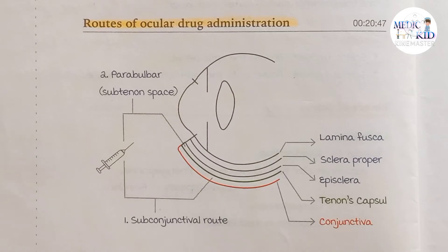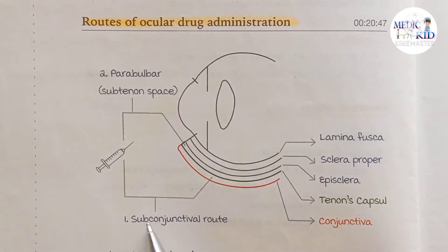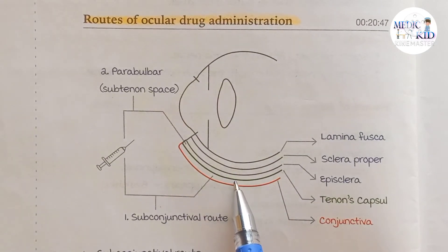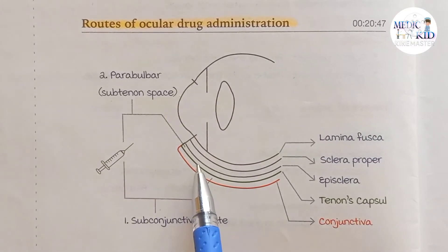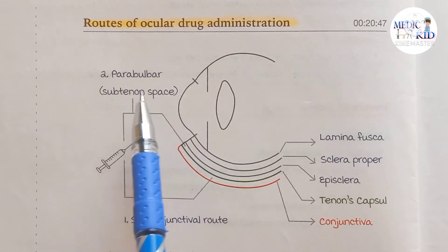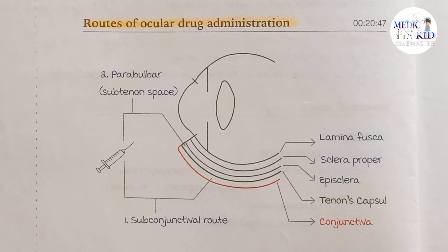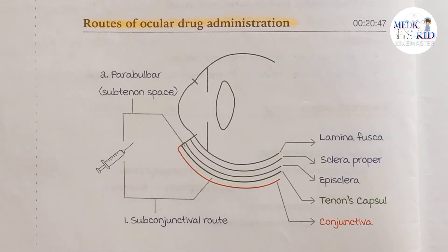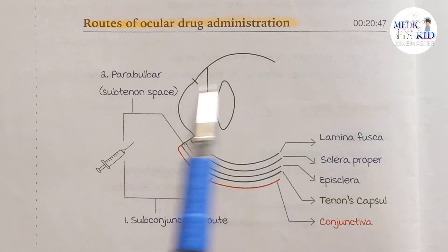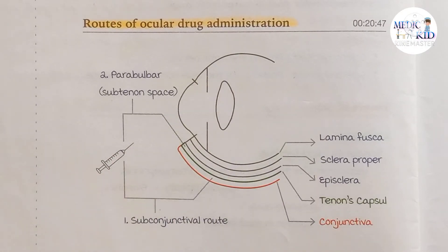If a doctor gives an injection beneath the conjunctiva, it is known as the subconjunctival route. If the injection is given below Tenon's capsule — the green line — it is known as sub-Tenon's, also called the parabulbar route. To summarize: below the conjunctiva is the subconjunctival route; below Tenon's capsule is the parabulbar route.